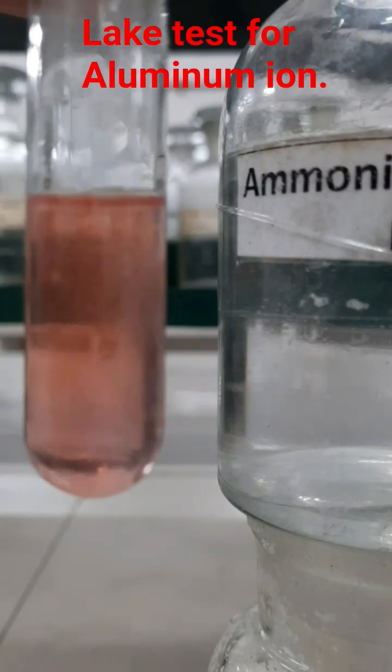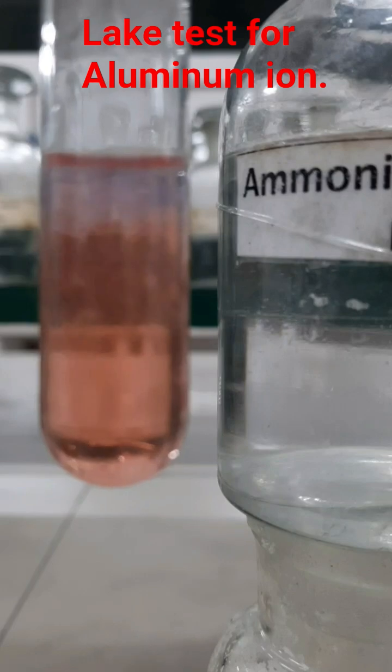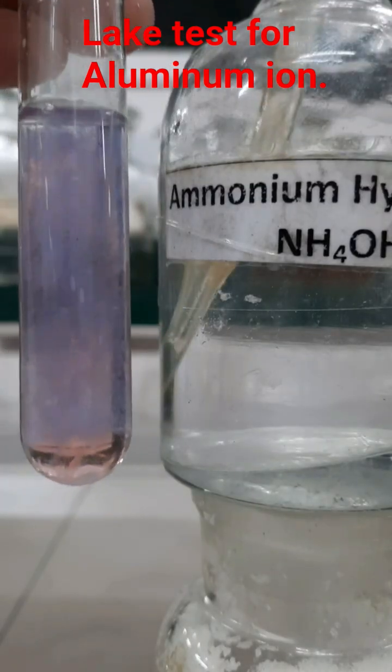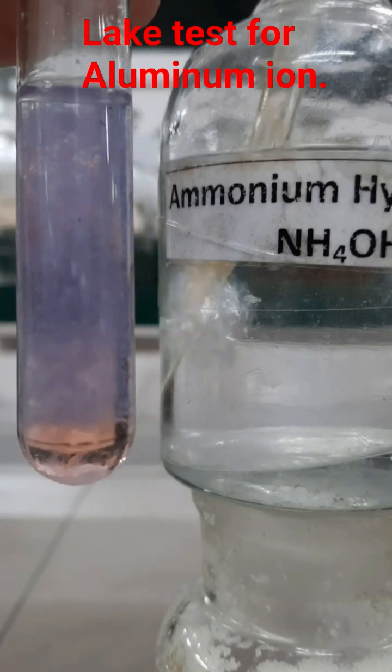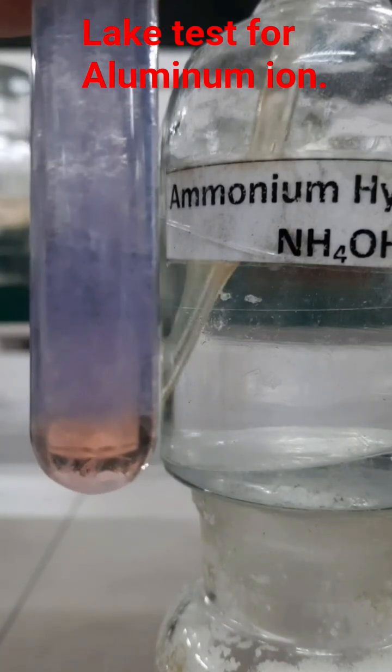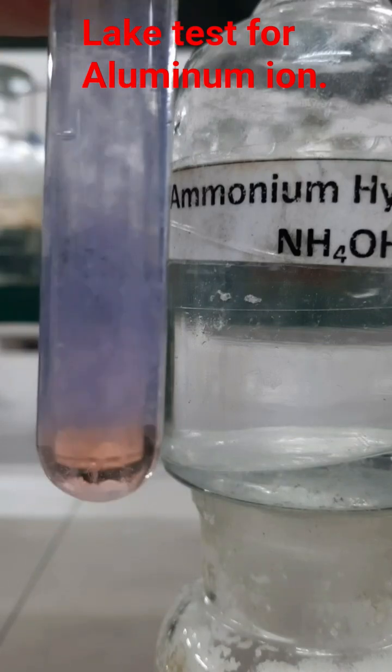After adding ammonium hydroxide solution, again you will get the gelatinous precipitate of aluminum hydroxide. It acts as a good adsorbent also, and the color of the precipitate will turn blue due to the adsorption of this blue litmus dye over it.